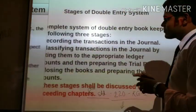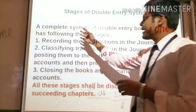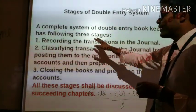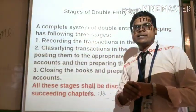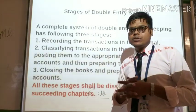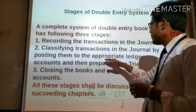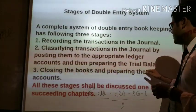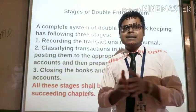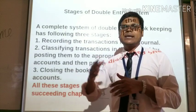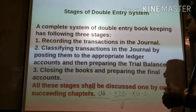Now the next topic is the stages of double entry system. A complete system of double entry bookkeeping has three stages. First, recording the transactions in the journal — the primary book is the journal. Then, classifying the transactions by posting them to the appropriate ledger accounts. After we record and classify the accounts — classifying means categorizing as per a particular nature — we prepare the trial balance.